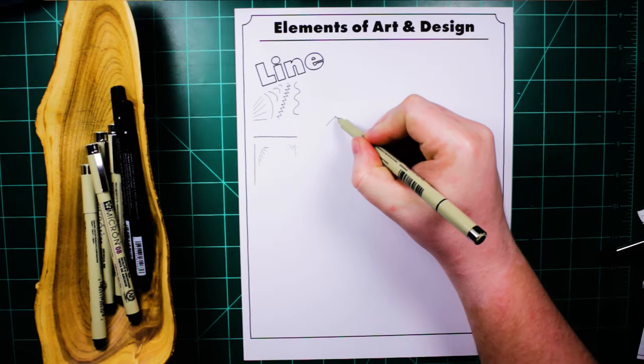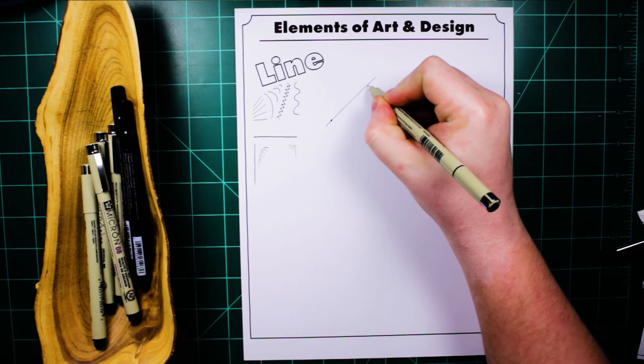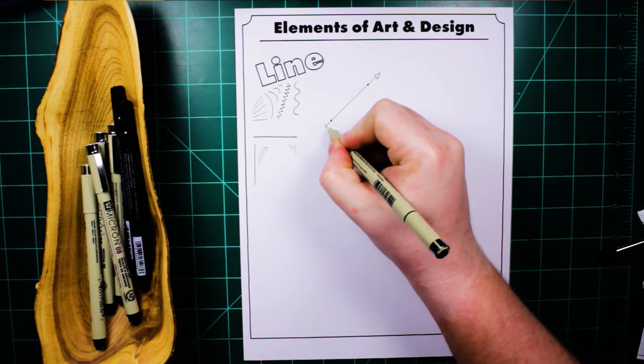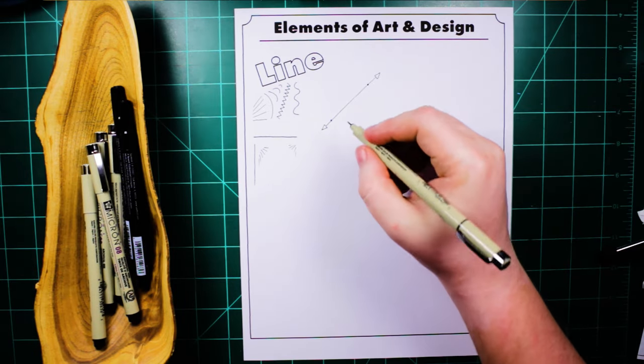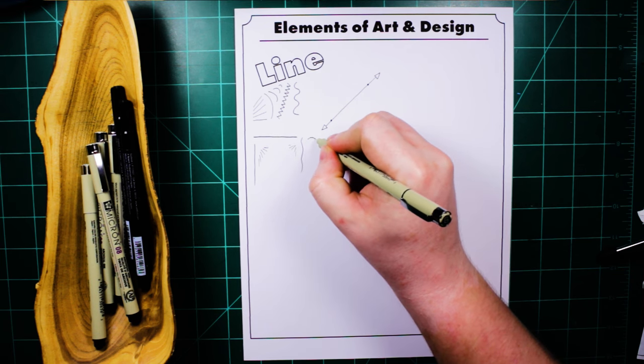If you've ever been in a math class, you've no doubt been taught that lines have to be straight and they go on forever. That's true for the mathematical definition, but this ain't math class. It's art class. When you're in math class, do what your math teacher says. When you're in Mr. New's art class, make art.